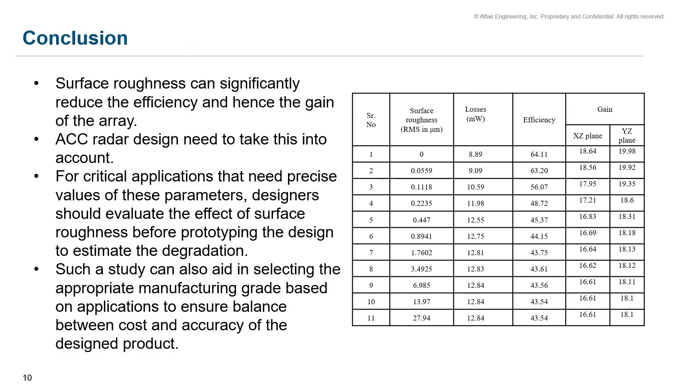To conclude this presentation, I can say in this study, the effect of surface roughness on the antenna array performance for ACC radar for automotive applications is studied thoroughly. After observing the data presented in the previous section, surface roughness can significantly reduce the efficiency and hence the gain of the array. For critical applications that need precise values of these parameters,